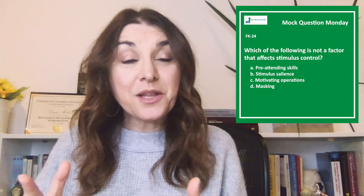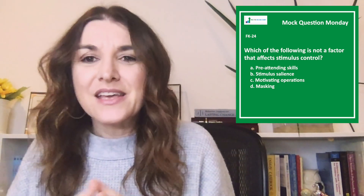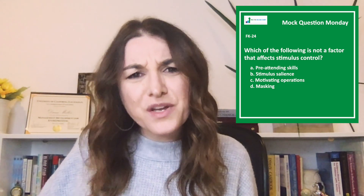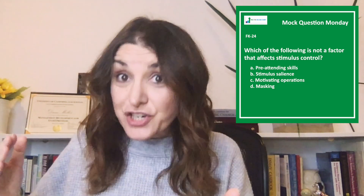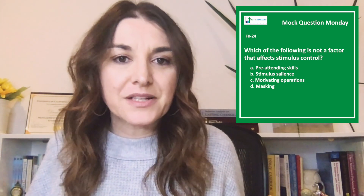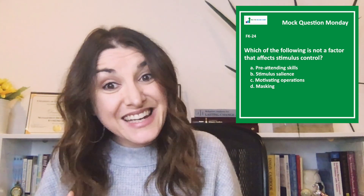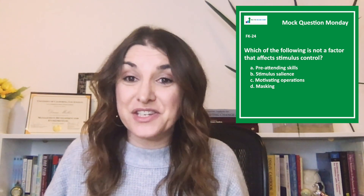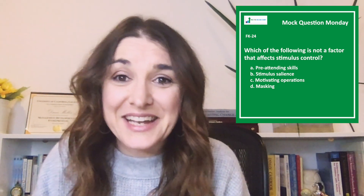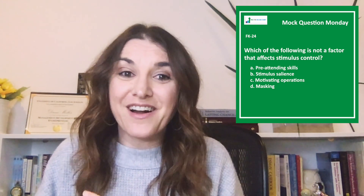The second element that affects stimulus salience is overshadowing. This is when the presence of one stimulus interferes with or overshadows the acquisition of stimulus control by some other stimulus. For example, if you're watching TV while trying to study, the television is likely to overshadow your study materials and make learning that much harder.